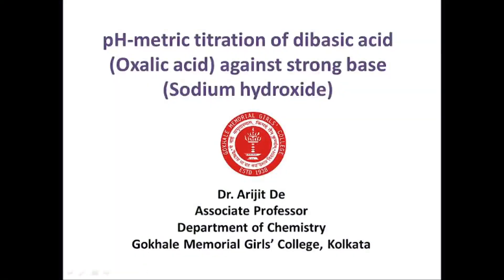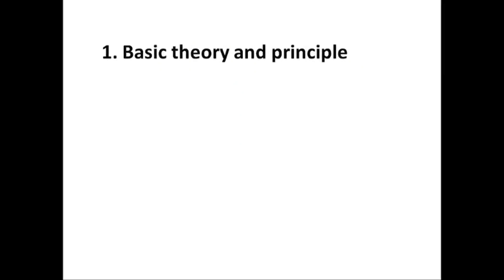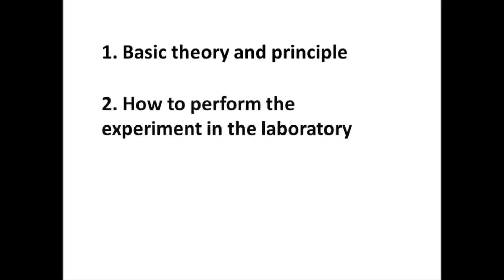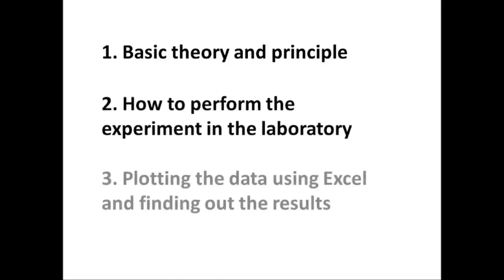Welcome students. In this demonstration video of an undergraduate physical chemistry practical entitled 'pH metric titration of dibasic acid against strong base,' we have chosen oxalic acid as the dibasic acid and sodium hydroxide as the strong base. This video is divided into three segments: basic theory and principle, how to perform the experiment in the laboratory, and finally plotting the data using Excel to find the results.